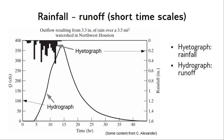That discharge decreases back down towards zero. This is a watershed in northwest Houston, showing outflow resulting from 3.3 inches of rain — a fairly significant event — over the course of less than a day in a three-and-a-half square mile watershed, which is about 1,500 by 1,500 meters. The fact that it starts and ends at zero tells us there isn't sufficient groundwater input, so the overland flow here is probably infiltration excess overland flow. We'd also expect a fairly short lag time between rainfall and runoff because the water doesn't have very far to travel.